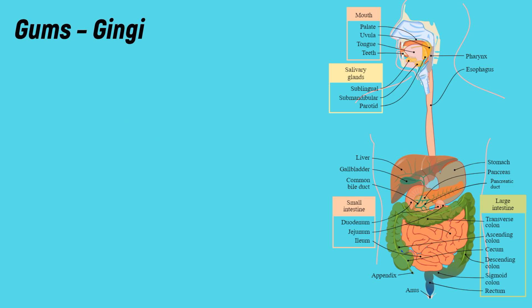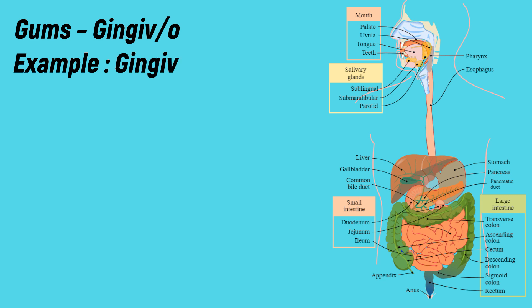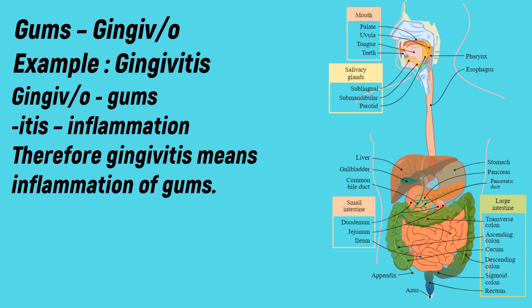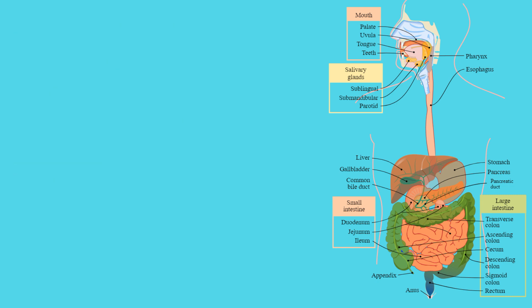Gums: the medical term is 'gingiva'. Example: gingivitis. Gingiva indicates gums, and -itis indicates inflammation. Therefore, gingivitis means inflammation of the gums.